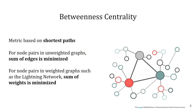Besides betweenness centrality, there are many other interesting centrality measures out there. However, betweenness centrality takes all nodes of the network into account to calculate each score, as opposed to degree centrality, which counts the number of edges incident to a node, hence providing a more local view from a network's perspective.